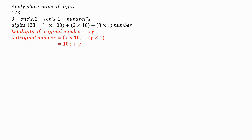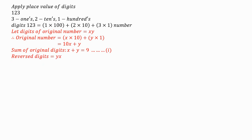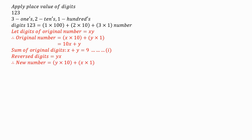We've been told that the sum of the digits of this number is nine, so X plus Y equals nine. We label that as Equation 1. Then we've been told if the digits are reversed, the reversed digits become YX. Therefore the new number will be Y times 10 plus X times 1, since they have changed their place values.